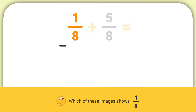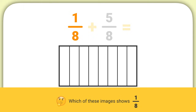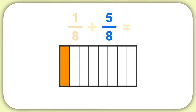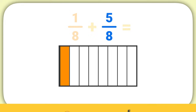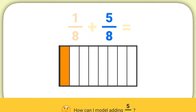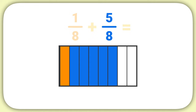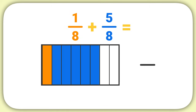You'll draw a rectangle, break it into eight pieces, and shade one of those pieces. Now let's add five-eighths. How can I model adding five-eighths? I will shade in five more pieces of my model. Now I have my model complete, but I need to write it as a fraction.